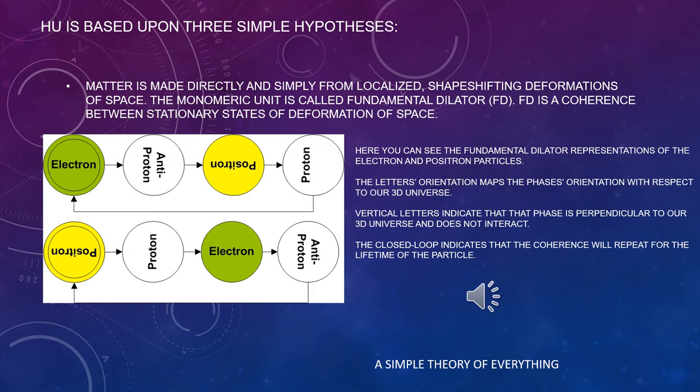The second hypothesis states that matter is made directly and simply from localized shape-shifting deformations of space. The monomeric unit is called fundamental dilator, FD. FD is a coherence between stationary states of deformation of space. Notice that I said space and not spacetime. Spacetime plays no role in the hypergeometrical universe theory.